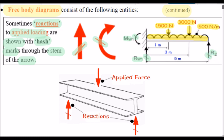The diagram below shows a simply supported beam with applied load and reactions shown with hash marks. These hash marks are sometimes added to reactive systems when the engineer wants to clearly annotate the reactions.